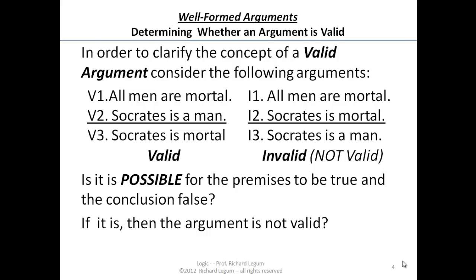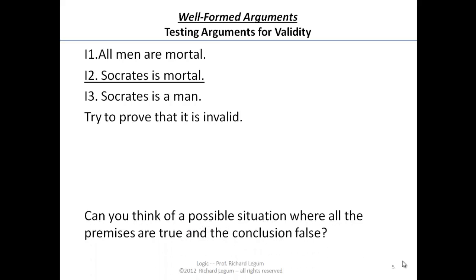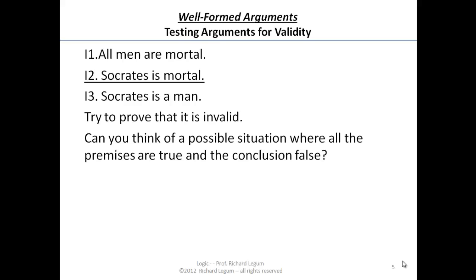If it is possible, then the argument is not valid. And remember, when we're asking whether it's possible for the premises to be true and the conclusion false, we're asking if it's a contradiction. So to test the second argument for validity, we try to prove it's invalid — that amounts to asking: can you think of a possible situation where all of those premises are true and the conclusion false?